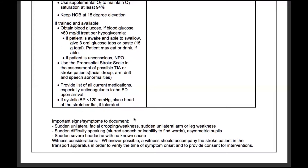Important signs and symptoms to document: sudden unilateral facial drooping or weakness, sudden unilateral arm or leg weakness, sudden difficulty speaking evidenced by slurred speech or the inability to find words, asymmetric pupil, sudden severe headache with no known cause, and then we have some witness considerations as well.